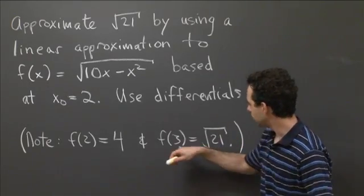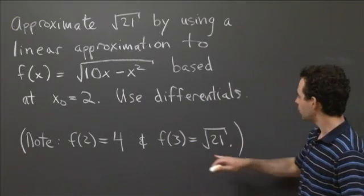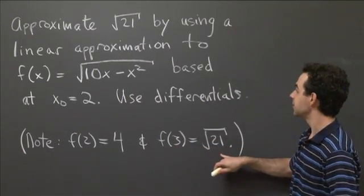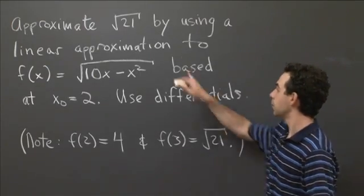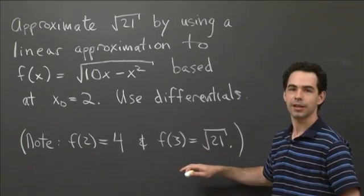Note that why are we using this function to approximate √21? Well, because at 3, the function value f(3) is exactly equal to √21. So to approximate √21 means approximate the function value at 3.